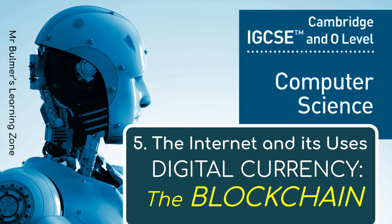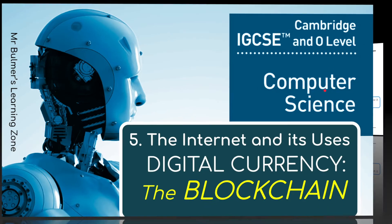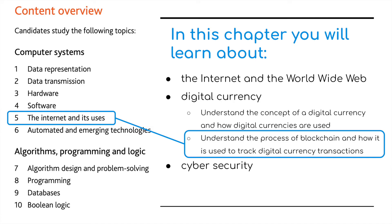Welcome back to another video from Chapter 5, The Internet and Its Uses. We're in Part 2, Digital Currency, and we're going to be focusing today on the blockchain. This is for the IGCSE and O-Level Cambridge Computer Science Qualification from 2023 to 2025.